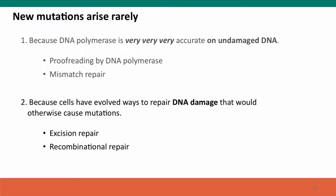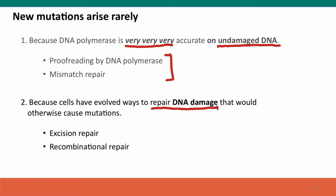New mutations arise very, very rarely — it's a very accurate process, provided the DNA that DNA polymerase is using is not damaged and is structurally normal. This is accomplished by a combination of proofreading by DNA polymerase and mismatch repair. But DNA can also get damaged, and cells have evolved ways to repair DNA damage because otherwise this damage would cause mutations. The two repair processes — which we won't cover in detail — are called excision repair, which cuts out damage, and recombination repair, which patches damage.